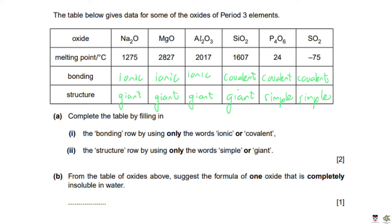From the table, suggest one oxide completely insoluble in water. Silicon dioxide is definitely insoluble, but aluminium oxide is also insoluble. Remember that aluminium is protected by a layer of aluminium oxide on the outside — that is why aluminium does not rust or undergo corrosion, because the insoluble aluminium oxide layer protects the aluminium inside from water.